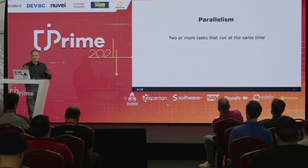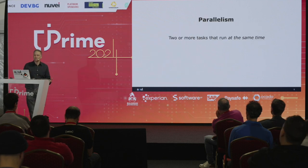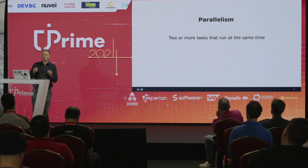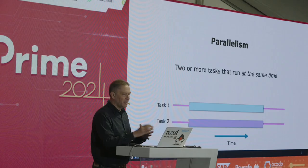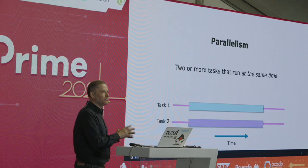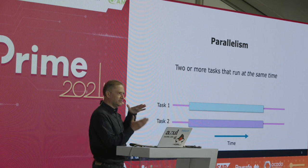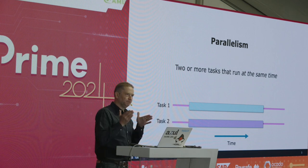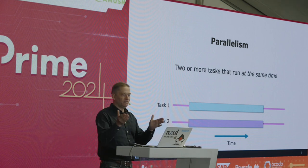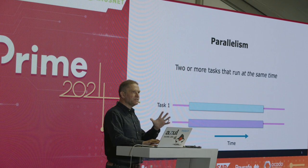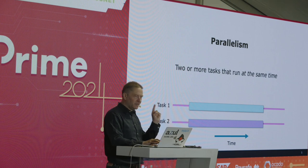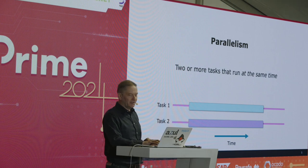That brings us to parallelism. Parallelism is where we have two or more tasks that actually run at the same time — and that's a guarantee. Using the same diagram, those two tasks are now running at the same time, actually running in parallel. That's quite an important distinction.